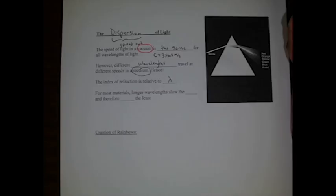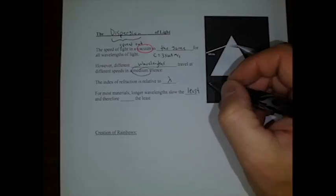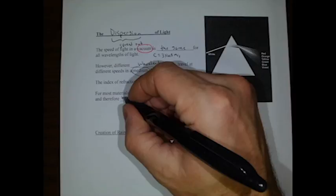For most materials, the longer wavelengths slow the least. So those longer wavelengths, which would be like redder colors, are going to slow down the least and therefore bend the least. So red will bend the least.